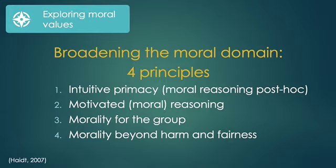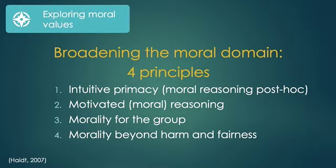Jonathan Haidt proposed that broadening the moral domain can not only better capture people's understandings of right and wrong, but can also highlight why we see those apparent striking contradictions — that people are selfish yet morally motivated, and that moral motivation is universal yet has cultural variability. He approached this research project with four principles in mind: first, intuitive primacy; second, motivated moral reasoning; third, morality for the group; and fourth, morality beyond harm and fairness.